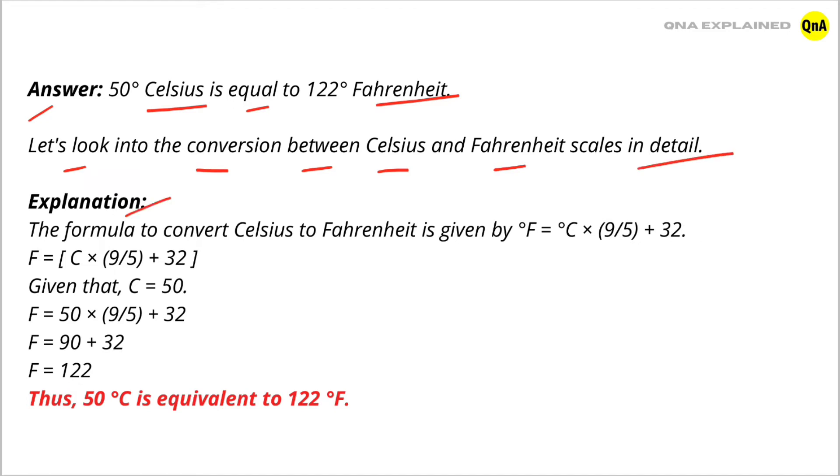Explanation: the formula to convert Celsius to Fahrenheit is given by Fahrenheit equal to Celsius into 9 upon 5 plus 32. Given that Celsius equal to 50,